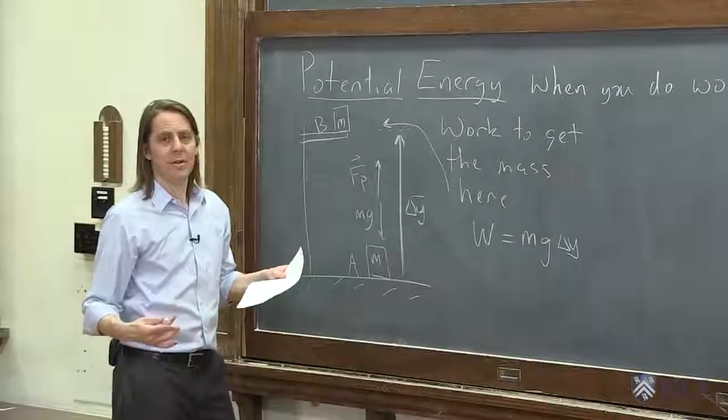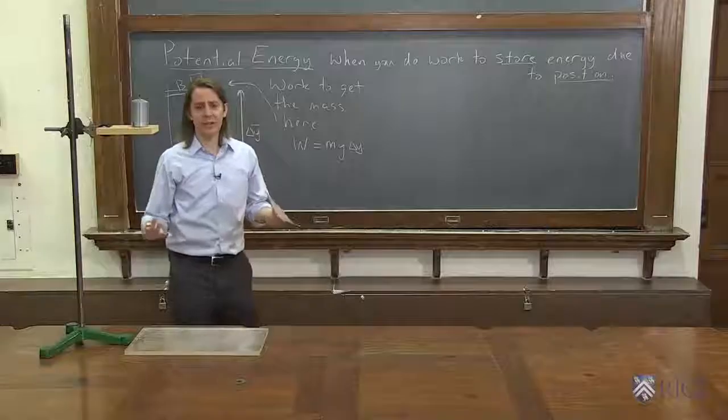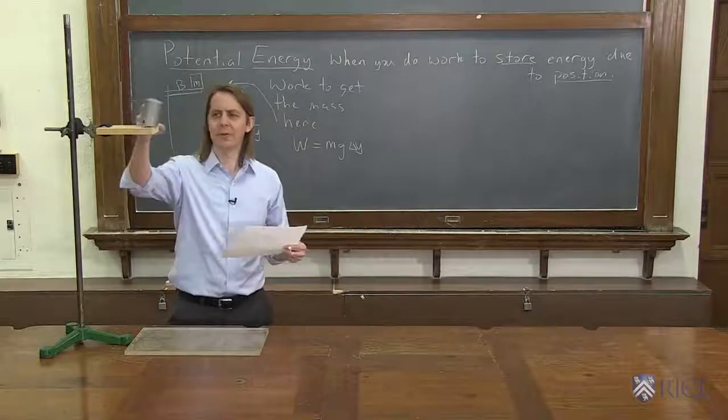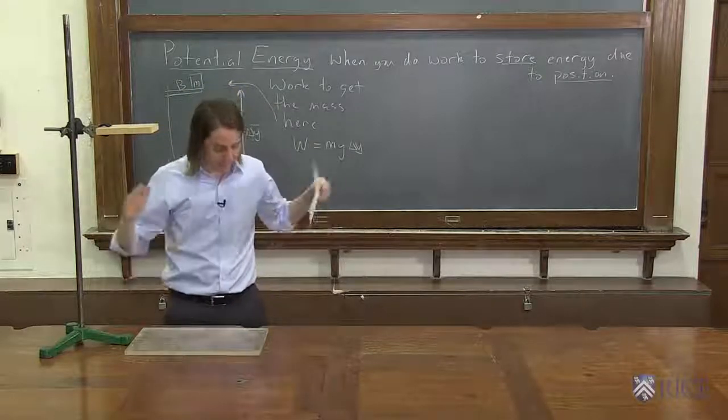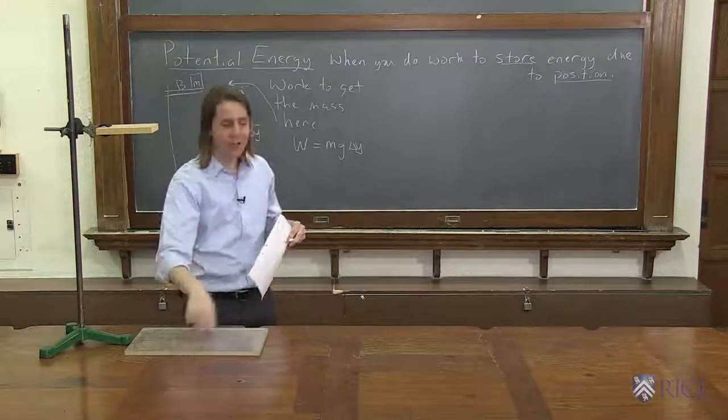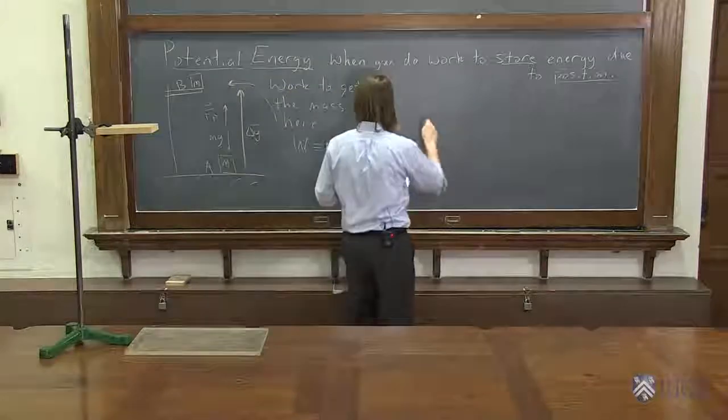Okay, so now it's at B. And at B it doesn't have any kinetic energy, but it has something. Because what if I do this? It picked up quite a bit of kinetic energy, right? When it hit the table it had a lot of kinetic energy. So you could also say at B, position B, it might fall.